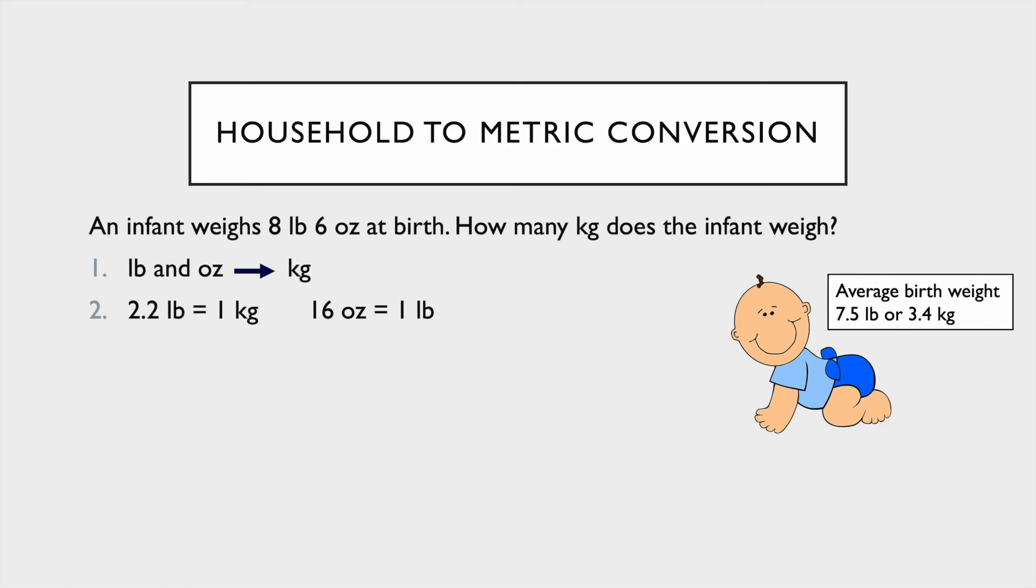Number two, still the same thing. We're going to write down the conversions we have. So we have 2.2 pounds is one kilogram and 16 ounces is one pound.